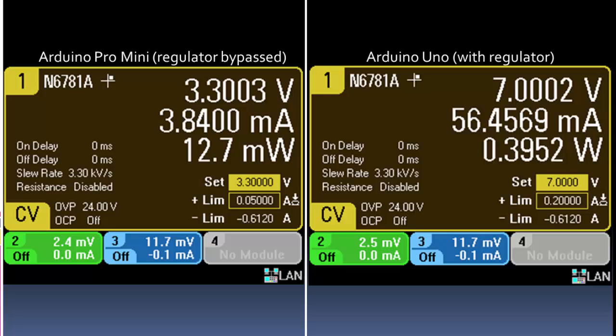I'm just doing some calculations on the Arduino. I'm not using any of the pins or anything like that. And we can see that with the Pro Mini, we're using about 12.7 milliwatts. And with the Uno, we're using about 0.4 watts.